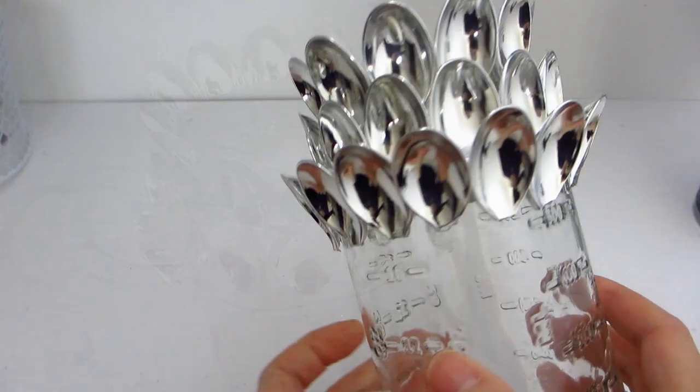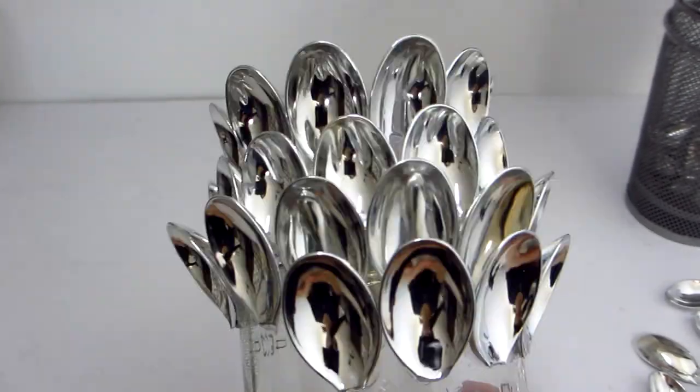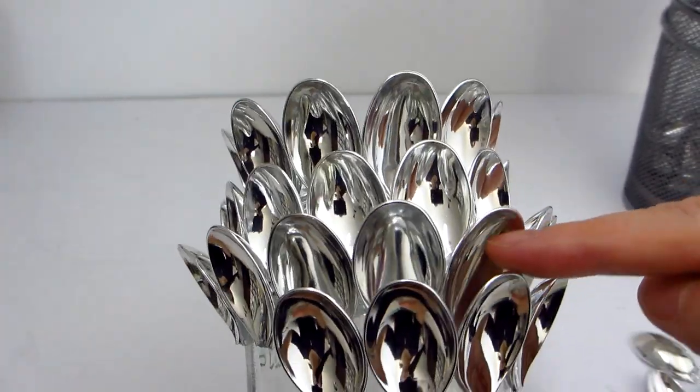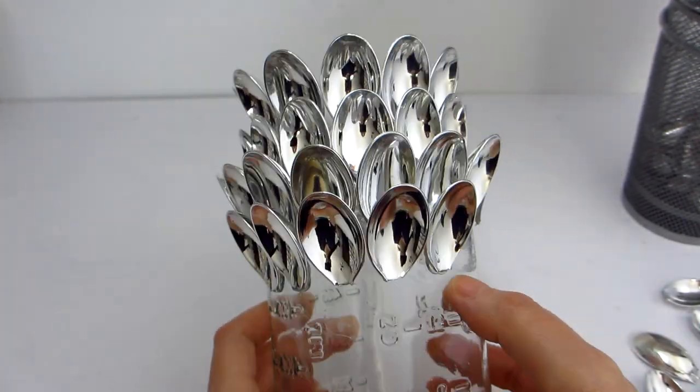And here is what the glass jar looks like so far. It is already taking the shape of a pineapple. You can see here that I only cover barely half of each spoon as I apply each row.